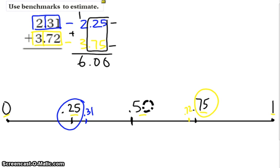So, my estimate using benchmark numbers for 2 and 31 hundredths plus 3 and 72 hundredths is the number 6.